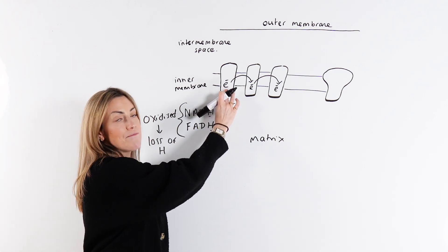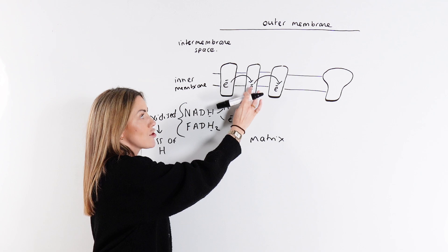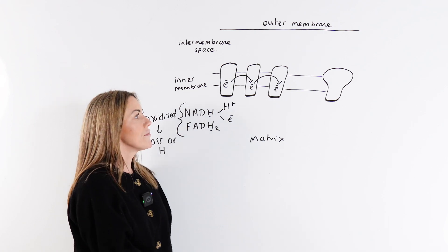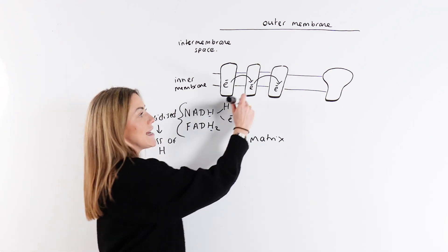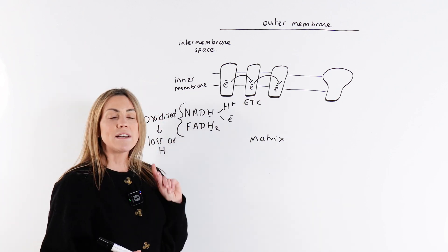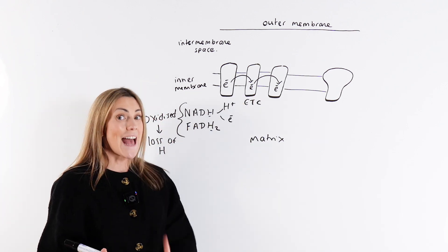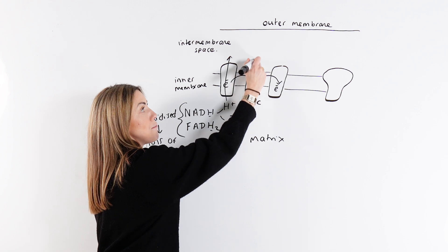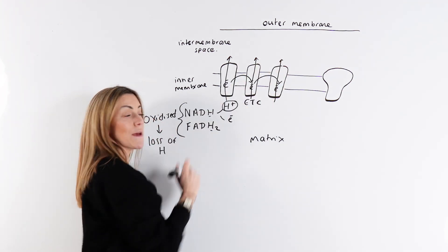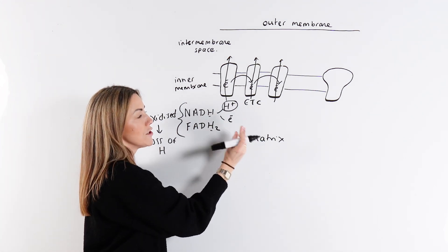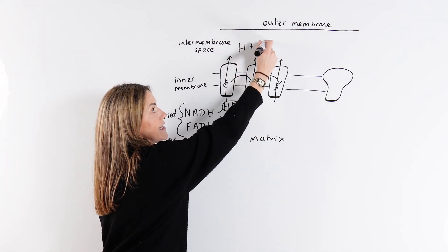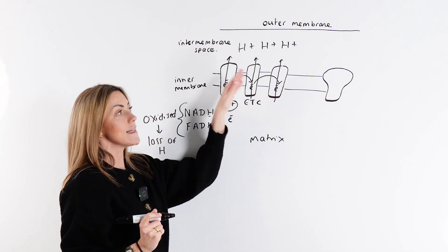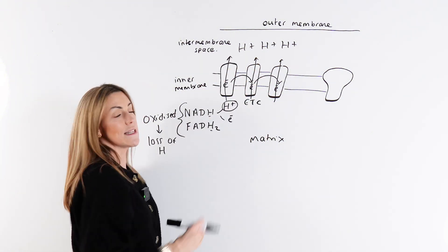When an electron transport protein loses the electron, we say it's oxidized; the next protein gains the electron, so it's reduced, and so on. This releases energy, and that energy is used to pump the protons — which also came from that hydrogen — from the matrix into the intermembrane space. So the energy from the transfer of electrons is used to pump the protons into the intermembrane space.